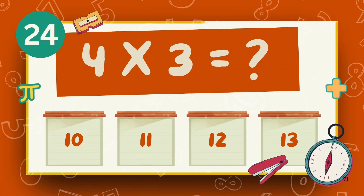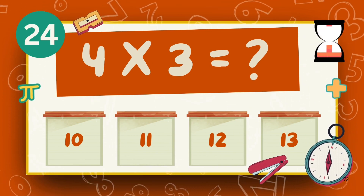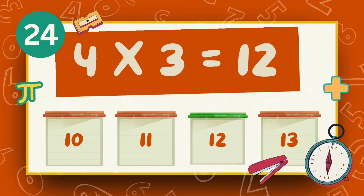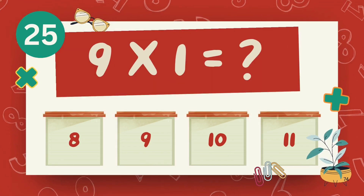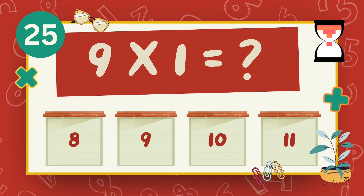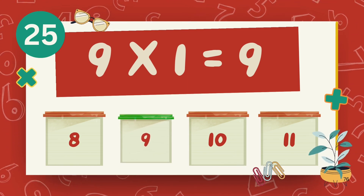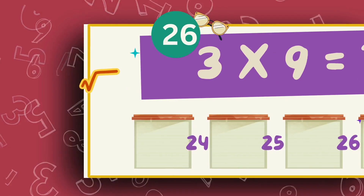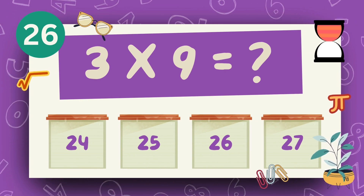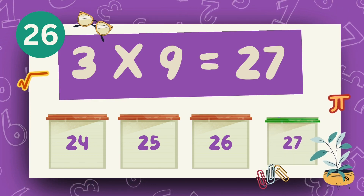What is 4 multiply 3? The answer is 12. What is 9 multiply 1? The answer is 9. What is 3 multiply 9? The answer is 27.